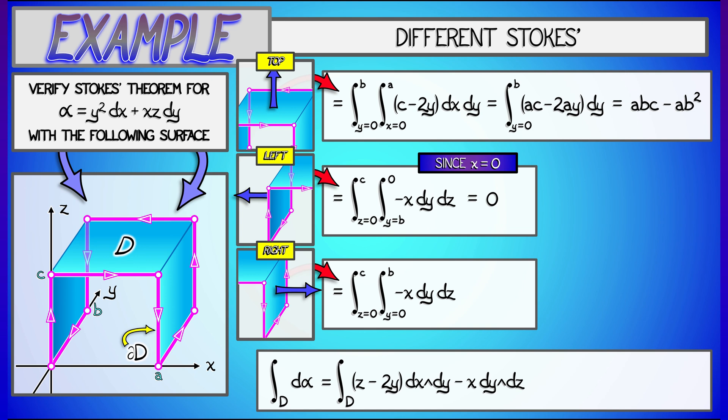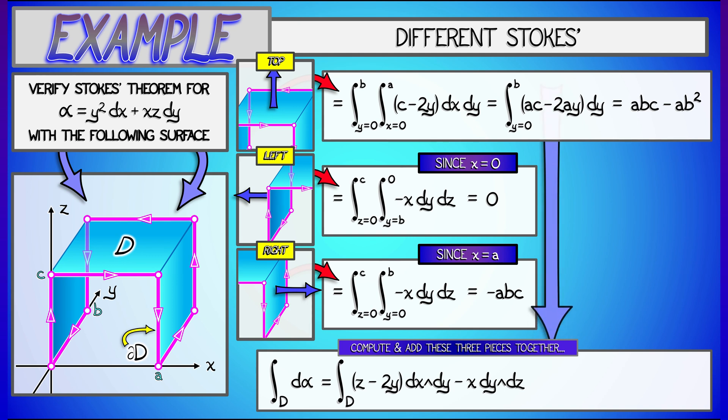Now, this time, x is not equal to 0. It is rather equal to a. So that means I have a really simple integral. This is minus abc. Now I'm going to add all of these three pieces together. I've got the abc minus ab squared. I subtract off the abc.